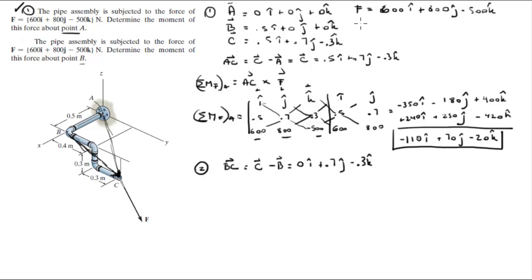Now that you have the vector, and you already have the force vector, you know that the moment that F creates about B is given by vector BC cross Cartesian vector form of F. You draw your matrix, I, J, K, BC is 0, 0.7, negative 0.3, and F is 600, 800, and negative 500.